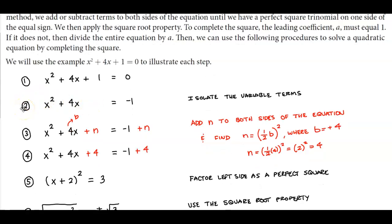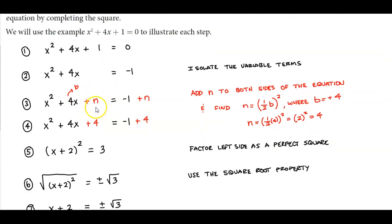The second step is for us to isolate the variable terms. So we leave x² + 4x on the left side and then we subtract 1 to this side. And I leave a space here in the second step because we need to add n to both sides of the equation. Adding n to both sides allows us to figure out what the perfect square is going to be on the left side.